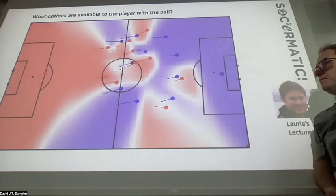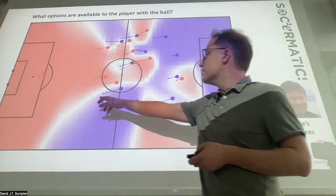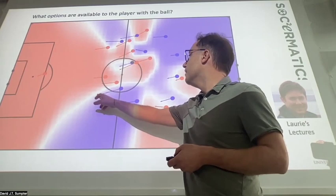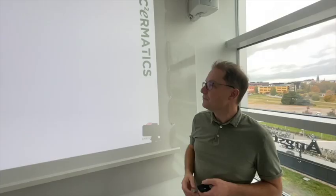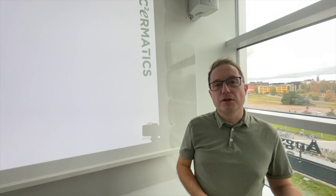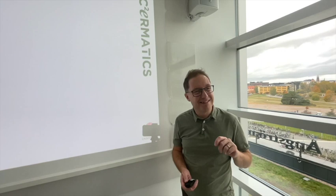The end product of this model shows roughly a 70% versus 30% probability that the blue player will control the ball at that location. White areas are 50/50 balls, red areas favor the red team, and blue areas favor the blue team. Different color scales are used in different visualizations but the underlying idea is always the same.